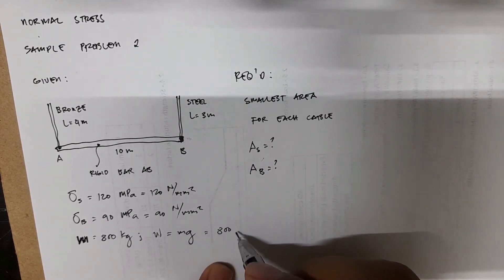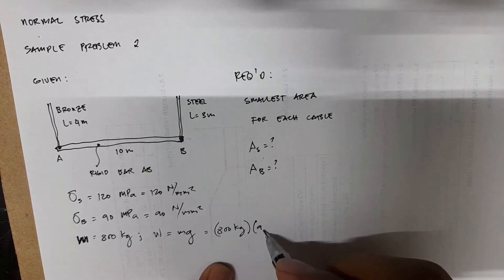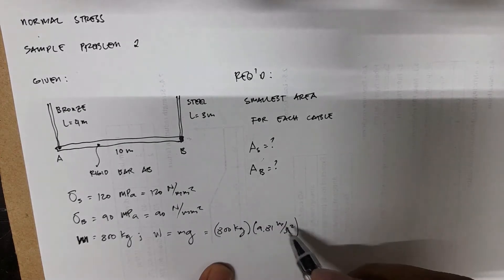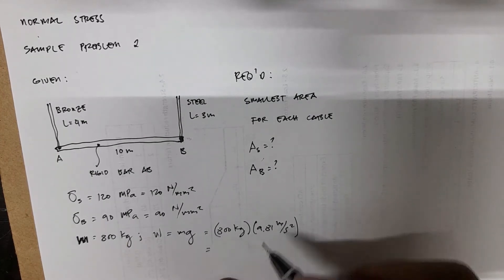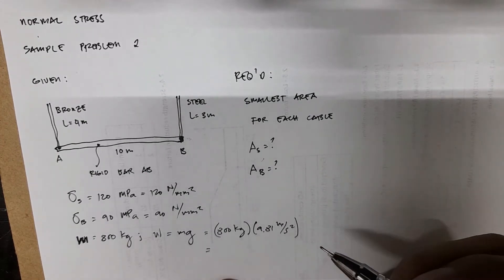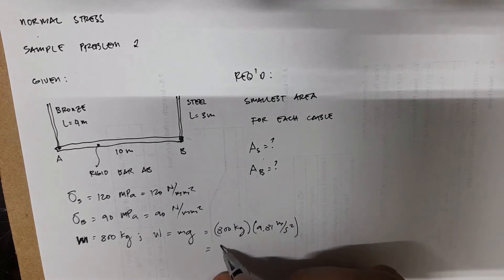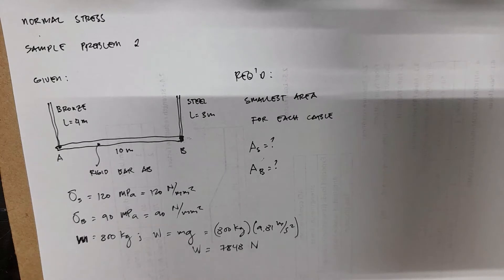So we have 800 kilograms times 9.81 meter per second squared. This kilogram times meter per second squared is just newton. So we have 7848 newtons. So this is now your weight, this is force as your weight.